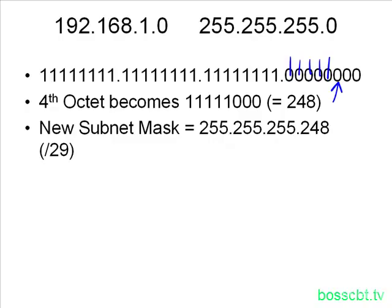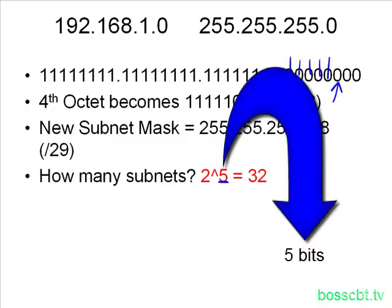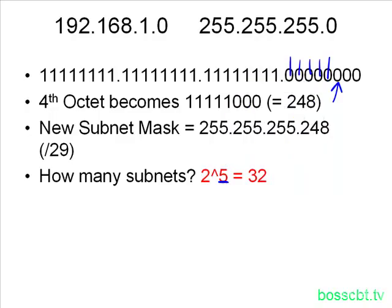Let's figure out what these subnets are, how big they are, and what IPs we can assign. How many subnets? This time we took five bits from the host portion, so it's 2 to the power of 5, which equals 32. By applying this new subnet mask to this Class C network, we can create 32 subnets. That's pretty good — if you had a lot of different subnets, this is a very good subnet mask to use.